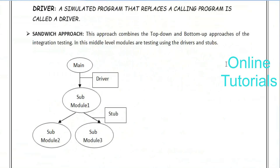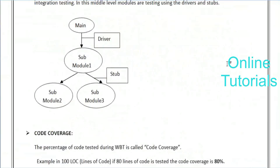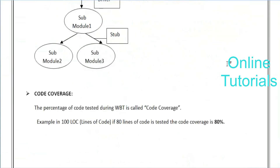The sandwich approach is best suitable when middle-level programs are not implemented. When individual bottom-level programs are not implemented, they use the top-down approach. If the main program is not implemented, the best way to do integration is the bottom-up approach. In white box testing, they also perform code coverage.